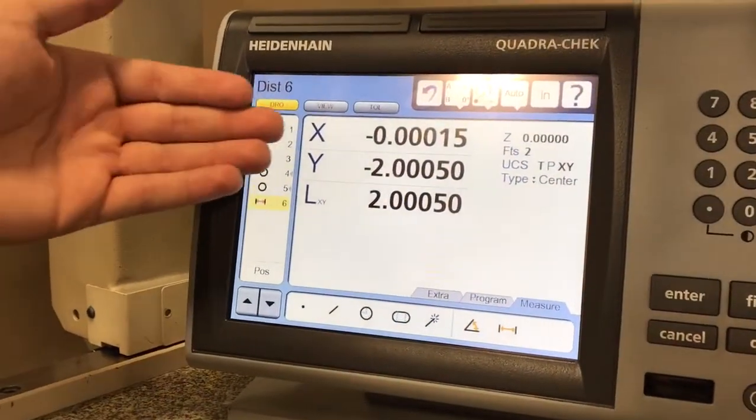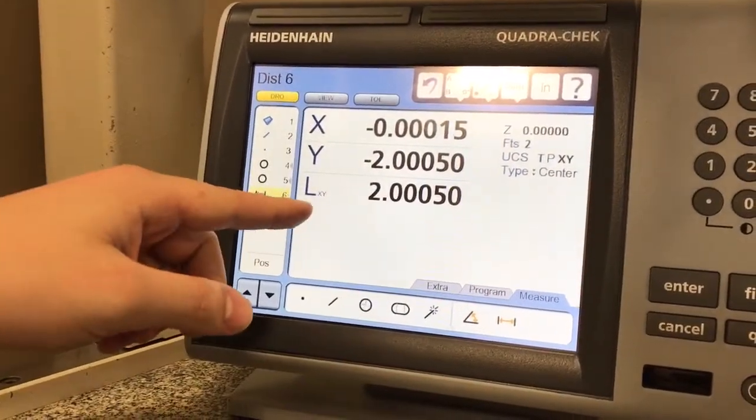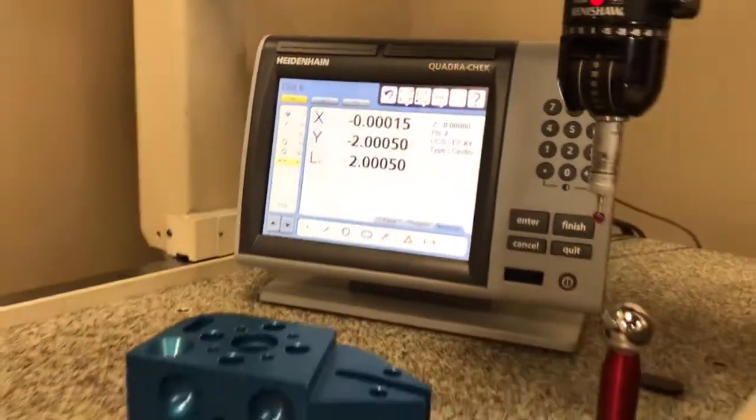You'll then notice that'll give you an x-y dimension and also give you your linear x-y dimension right there.